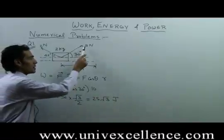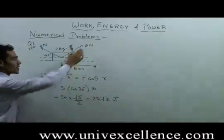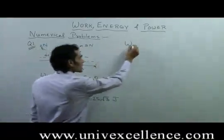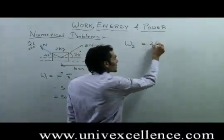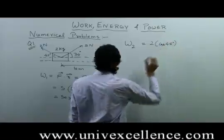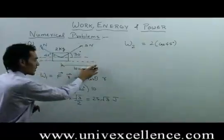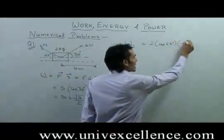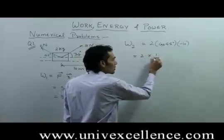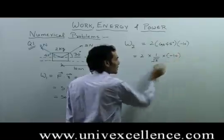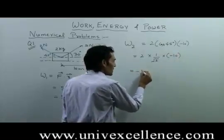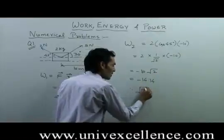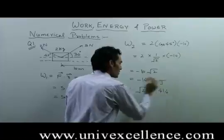Now, work done by this 5 N force does not depend on the work done by this 2 N force. The work done by the 2 N force is 2 cos 45 into displacement, and since displacement is in the forward direction while the force is in the backward direction, we have a negative sign: 2 into (1/√2) into minus 10, which is minus 10√2, approximately minus 14.14 joules.